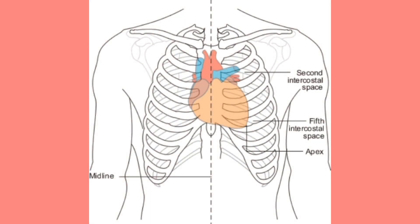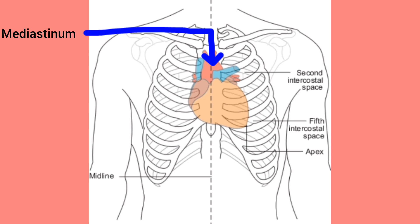The heart is a muscular organ just slightly bigger than a person's clenched fist. It is located in the thorax, most specifically between the two lungs, in a space called the mediastinum. The heart is covered by a tough membrane called the pericardium, which separates it from other structures found in the mediastinum. This position allows the heart to pump oxygen-rich blood to the entire body and send poorly oxygenated blood to the lungs where gas exchange takes place.